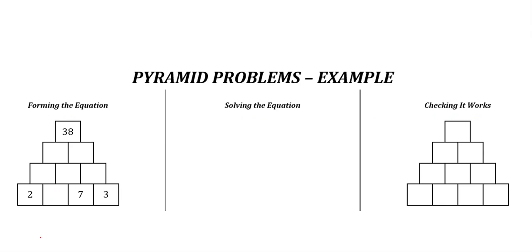The first part is we have to form the equation. We don't know what this number is on the bottom row, so we're going to give it a name—a letter. As it's a number, we'll call it n for number. We add these two numbers together to get the number